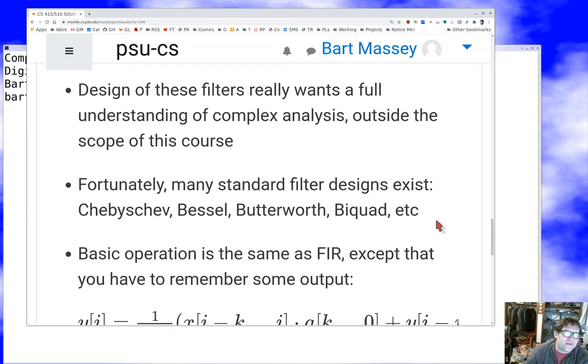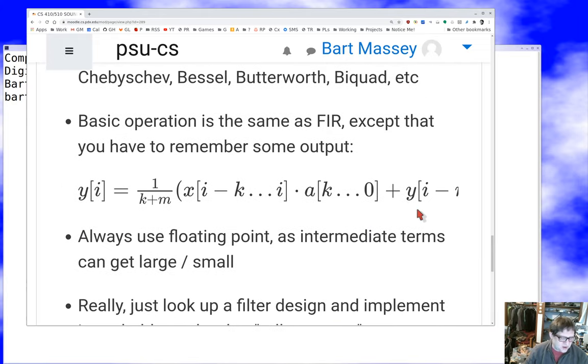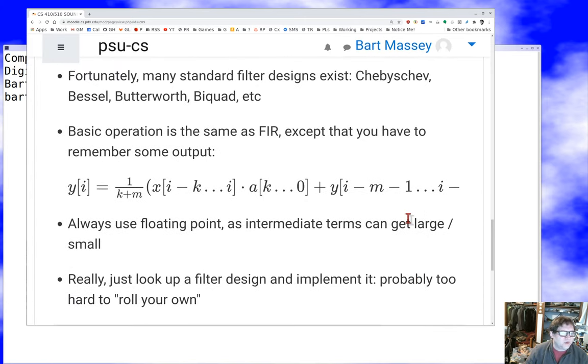Once you've got the filter coefficients for the output and the input, it's the same computation you had before. We take the inputs and multiply them by the input coefficient. We take the past outputs and multiply them in reverse order by the past output coefficients. Then we just average again to get the amplitude right, and here's my output in IIR. So the computation's the same in some sense. You're going to get some delay because you can't compute the i-th output until you've computed a bunch of the other outputs as well as a bunch of the inputs. But in general, you're always going to have delay in this situation.